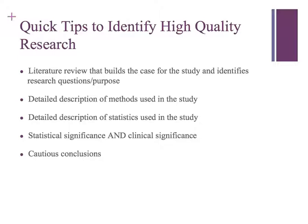A good article will give you a detailed description of how the data were analyzed. For quantitative studies, this means statistics; for qualitative research, it means thinking about how they examined text to pull out themes and codes in a rigorous and trustworthy manner. And regarding findings — did they find statistical significance, and is it clinically significant? A good article will talk about the real-life significance of what they found. Every article should draw cautious conclusions; we don't prove anything in these studies — we find evidence to support hypotheses, and we really can't say anything for certain.